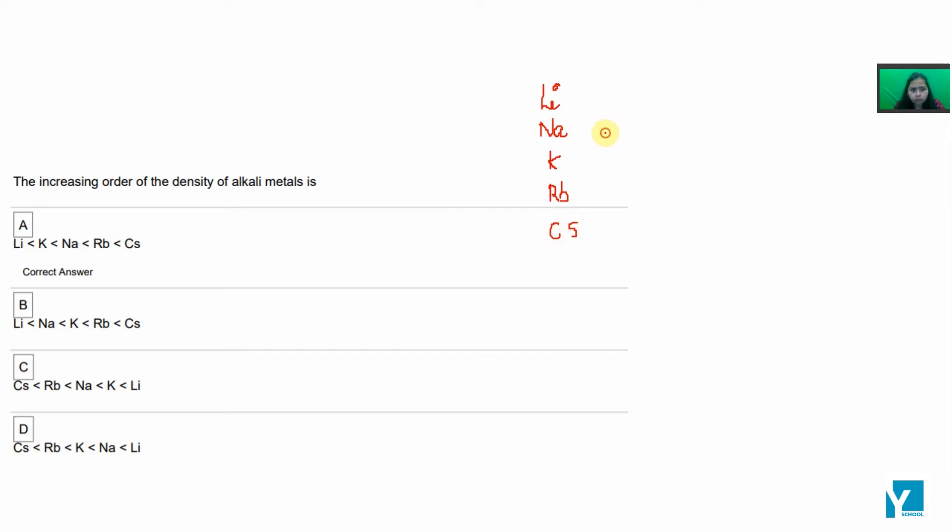As we go down the group, density increases with the increase in atomic mass, as density and mass are proportional. Density is increasing.